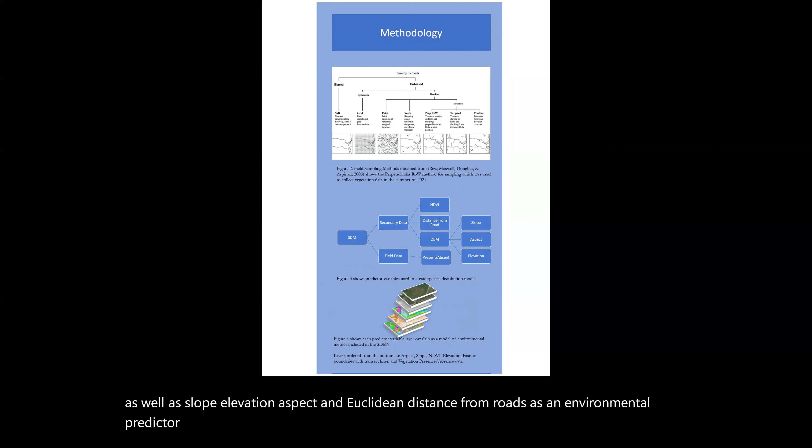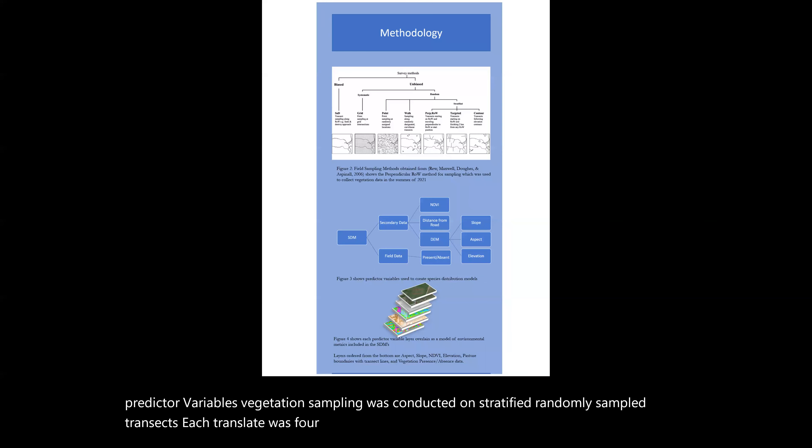Vegetation sampling was conducted on stratified, randomly sampled transects. Each transect was 400 meters long, consisting of consecutive 10 by 10 meter grids that make up singular data frames. Using GIS and GPS technologies, students maintain geo-referenced data that were then used to map spatial and temporal trends.